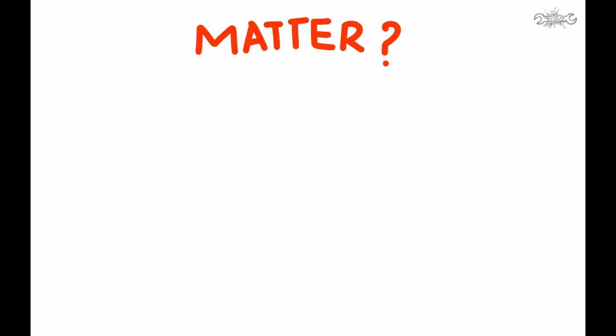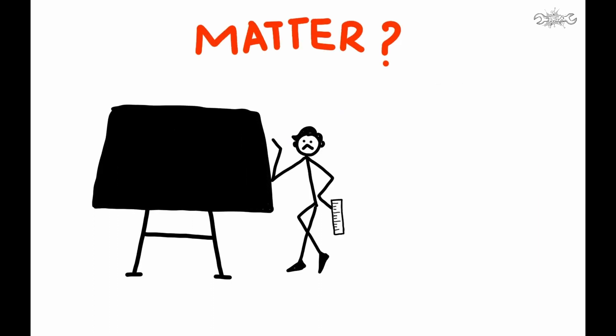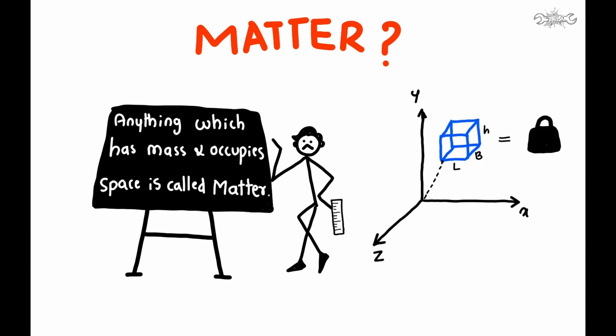So what is matter exactly? We were taught in school that matter is anything that has mass and occupies space. Let us understand this with an example.